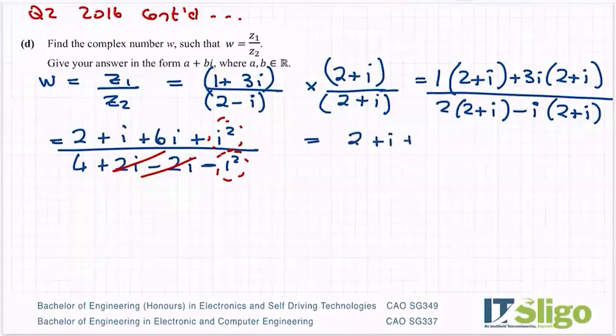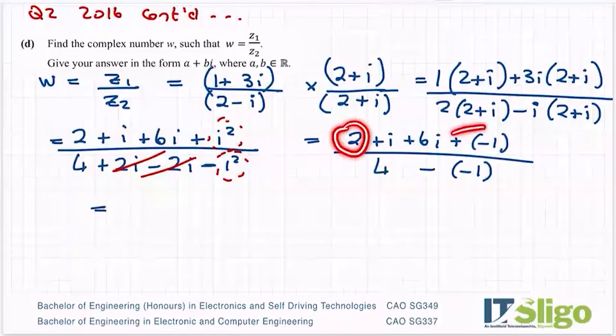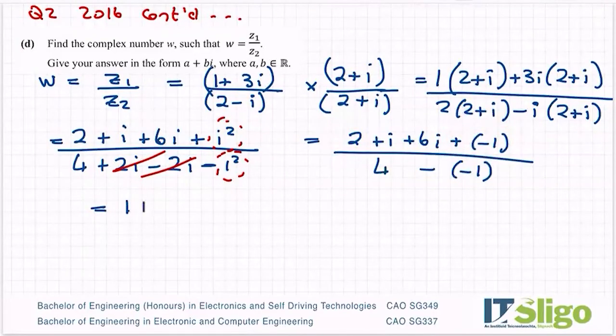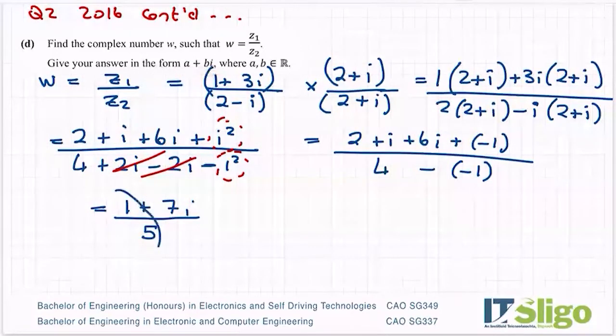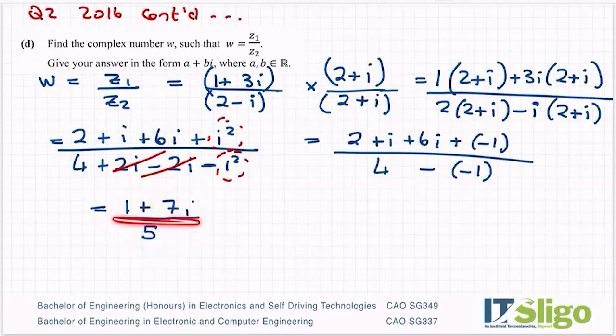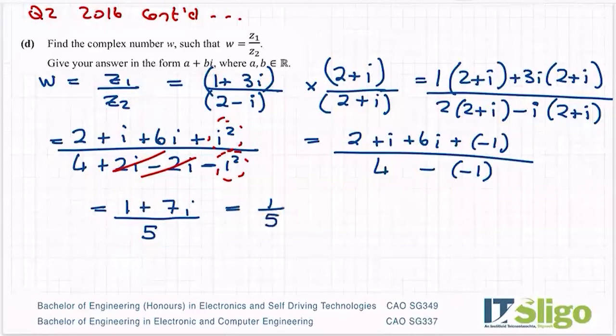So I'm going to get 2 on the top plus i plus 6i plus minus 1. And on the bottom, I'm left with 4 minus minus 1. So let's tidy that up on the top. I have 2 minus 1 is 1, and I have 6i and 1i is 7i over 4 minus minus is a plus over 5. And it wants the answer in the form a plus bi. So break it up into its real part and its imaginary part. Both of those parts are over 5. So it's the same thing to write it as 1 over 5 plus 7 over 5i or 7i over 5. And that is your answer to w. That's what w is equal to.